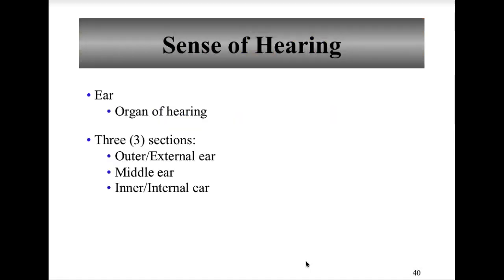The organ of hearing is the ear. Specifically, the organ of hearing is the spiral organ, or organ of Corti, which is present in the cochlea of the inner ear. The sensory receptors are called mechanoreceptors. Once stimulated to threshold, the impulse travels on the cochlear branch of the vestibulocochlear nerve — cranial nerve eight — which leads to the primary auditory cortex, the temporal cortex of the cerebrum.